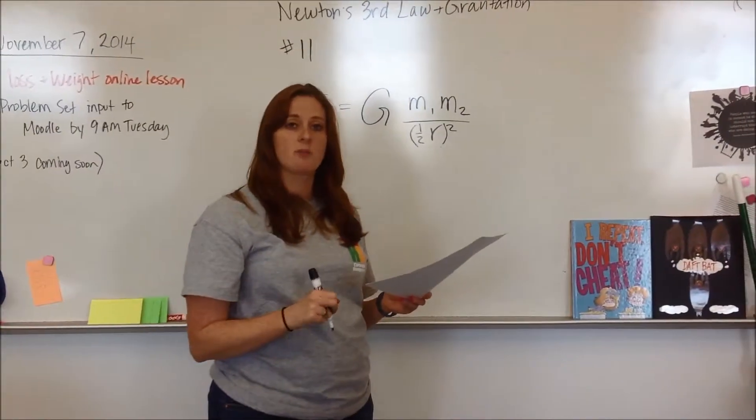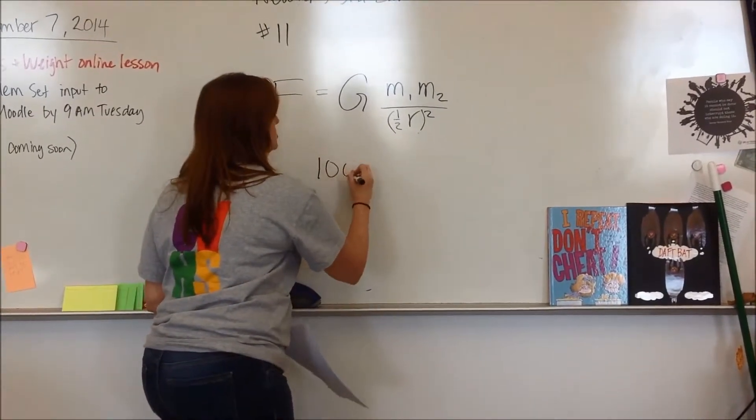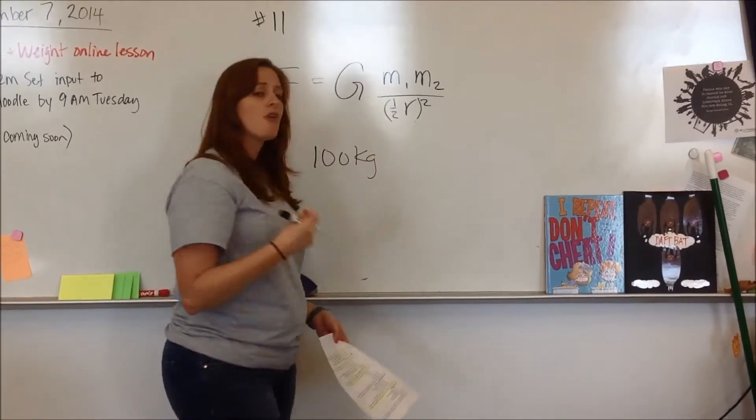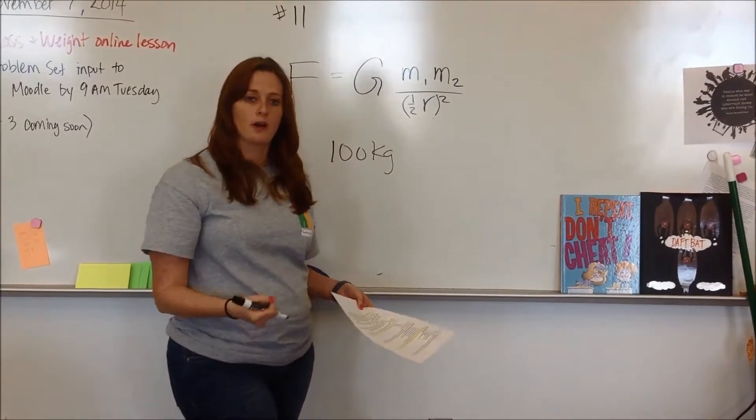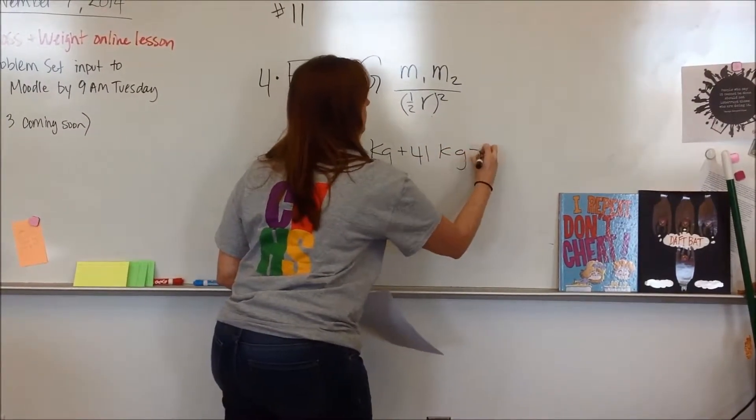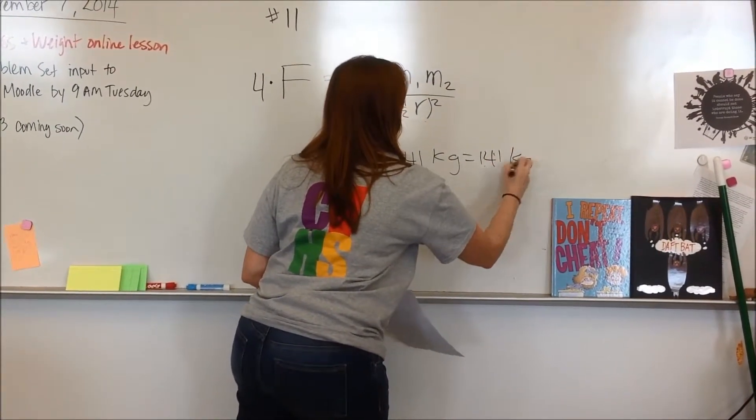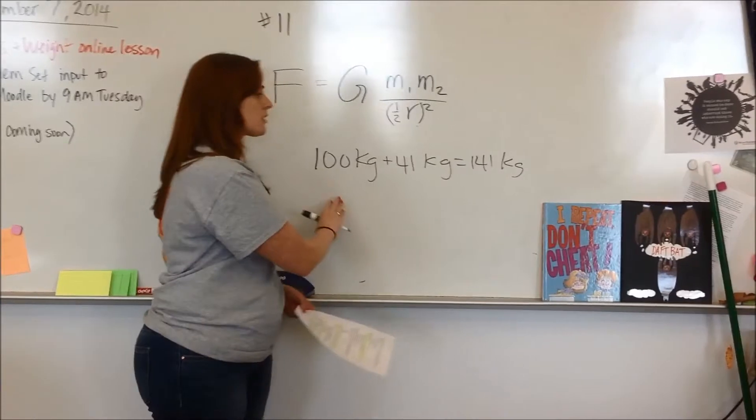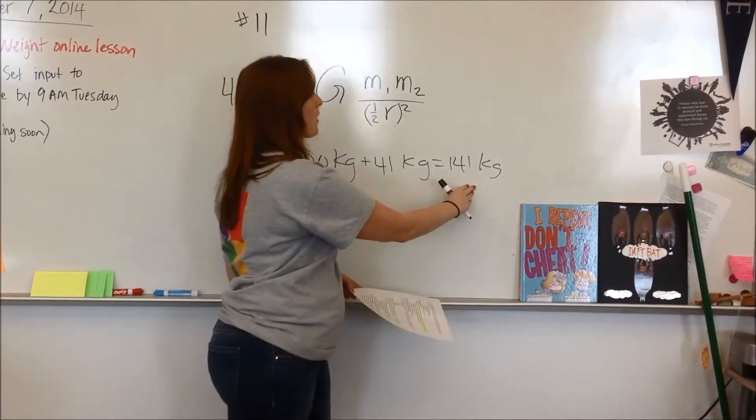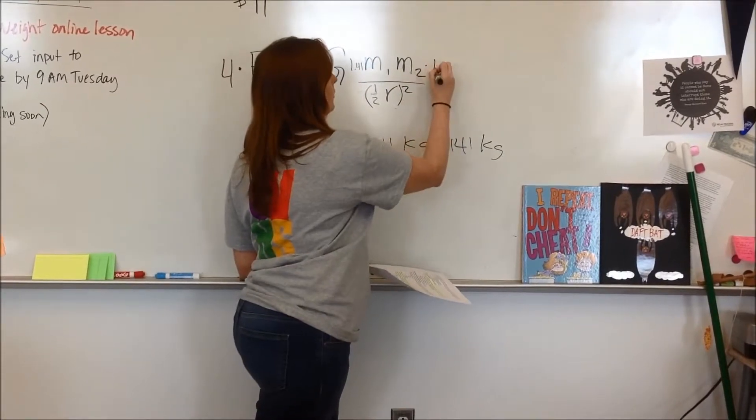If each mass increased by 41%, what that really means is, say I started with 100 kilograms, 41% of that is 41 kilograms, so it's increased by 41 kilograms. In order to get from my original mass to my new mass, I have to multiply each of these times 1.41.